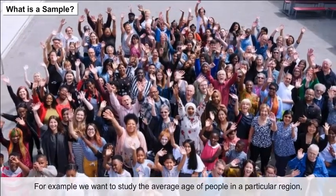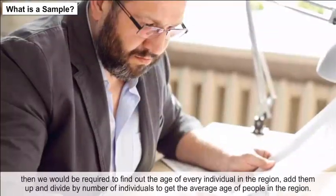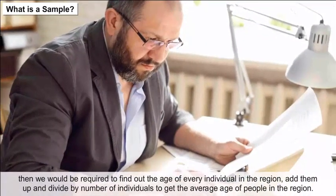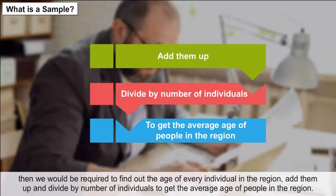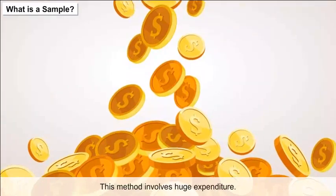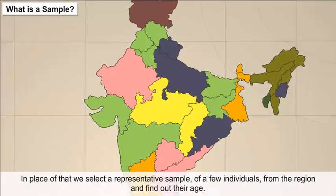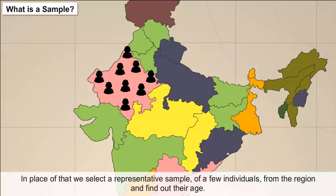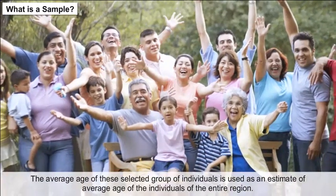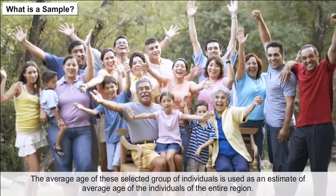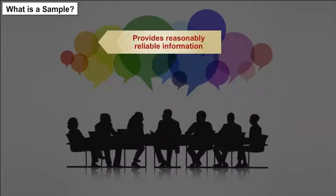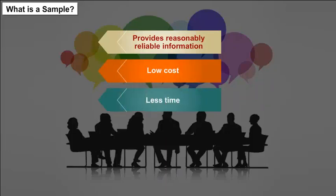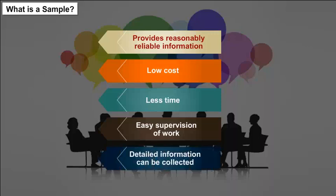For example, to study the average age of people in a particular region, we would find out the age of every individual, add them up, and divide by the number of individuals. Since this involves huge expenditure, instead we select a representative sample of a few individuals from the region and find their average age, which is used as an estimate for the entire region. Advantages of sample surveys: provides reasonably reliable information, low cost, less time, easy supervision of work, and detailed information can be collected.